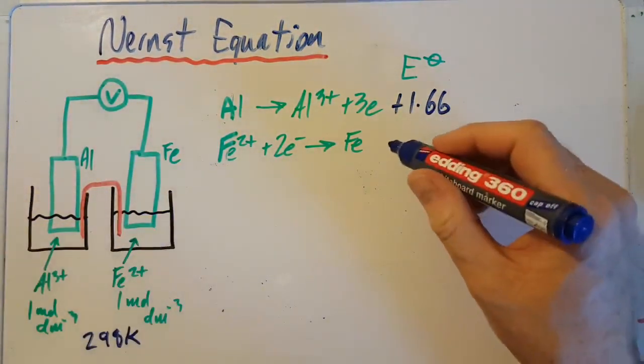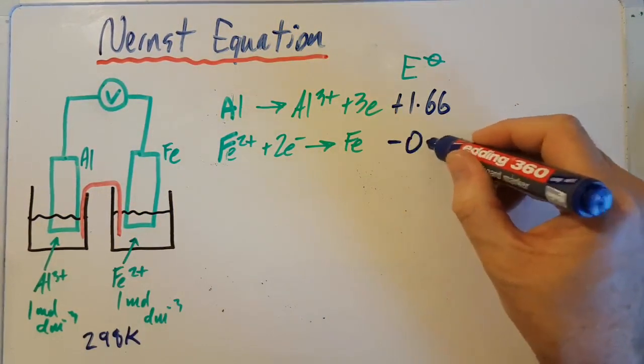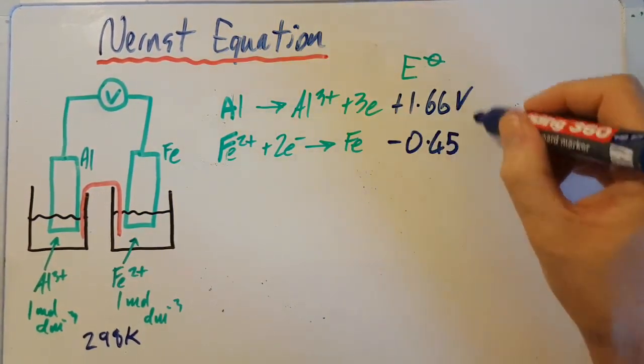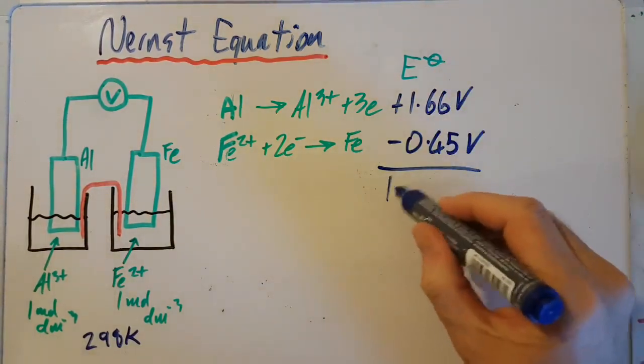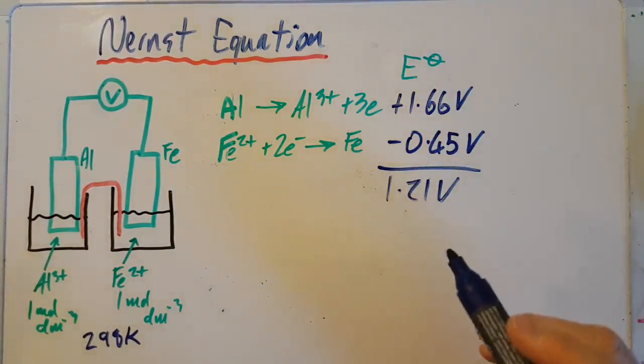This one I didn't flip, so I'm going to keep the sign the same: minus 0.45 volts. And to work out the voltage of the cell, add them up: 1.21 volts. Fantastic.